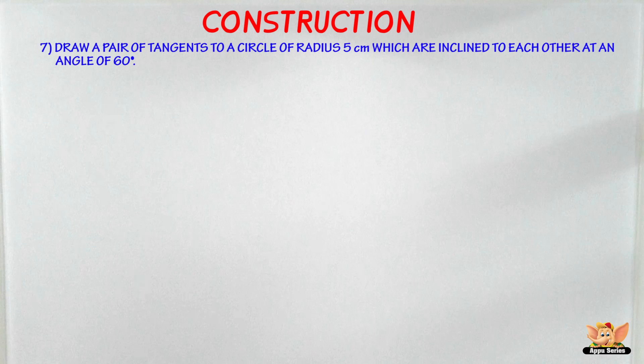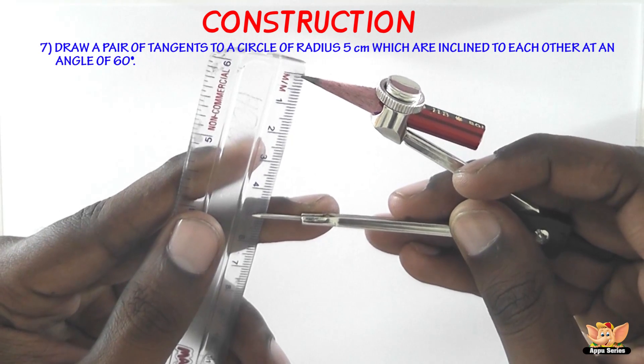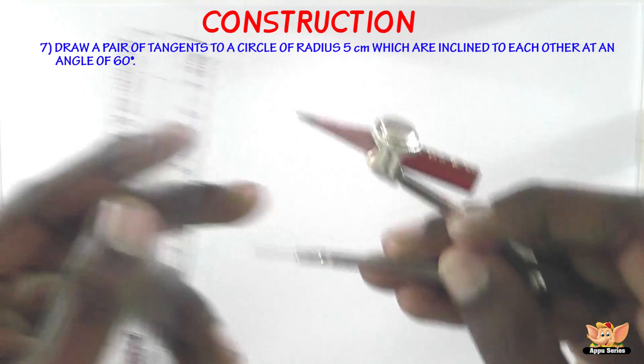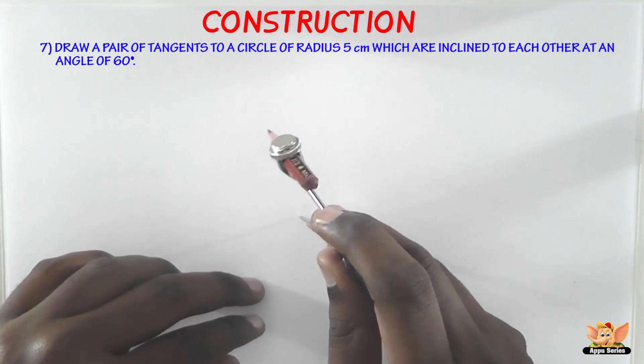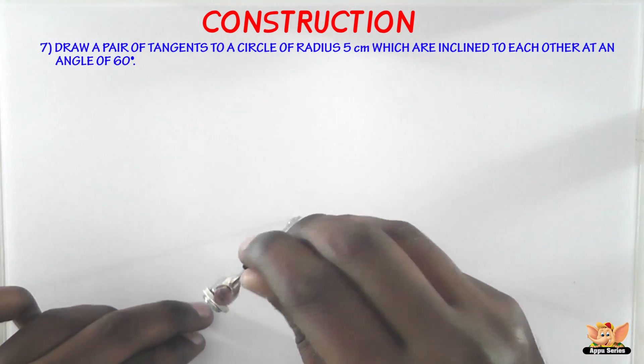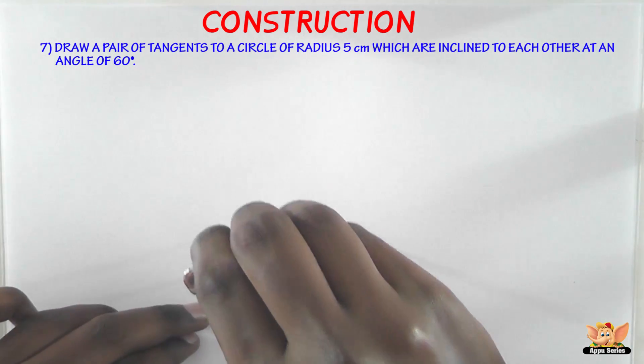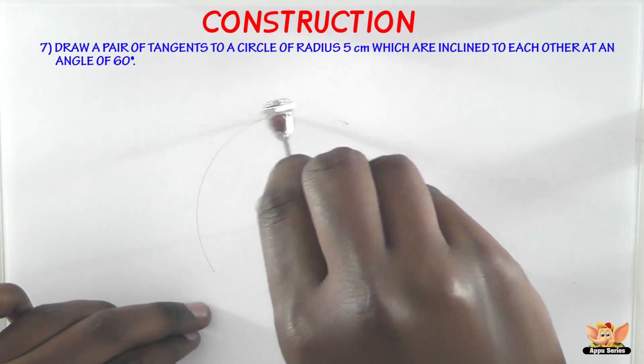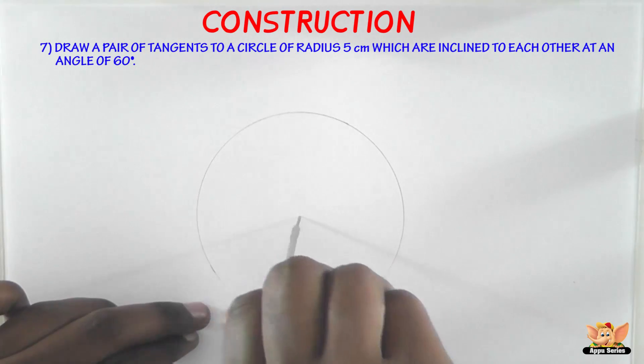The first step is to take a point O on the plane of the paper and draw a circle of radius OA equals 5 centimeters. So let's take 5 centimeters on the compass using a ruler. Now construct a circle with radius 5 centimeters.